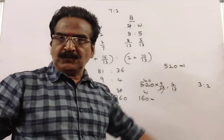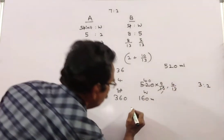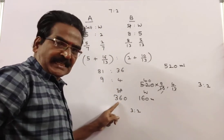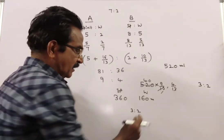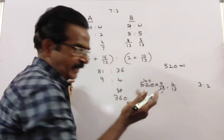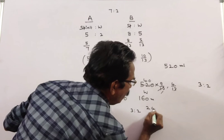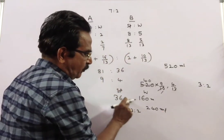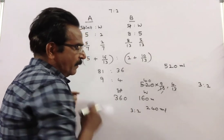So here the ratio should be 3 is to 2, so this is 3 times 120s, so water must be 2 times 120s, 240 ml. Water must be 240 ml to maintain the ratio 3 is to 2.